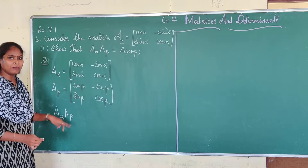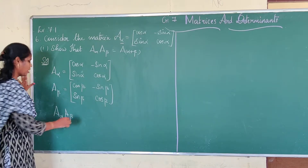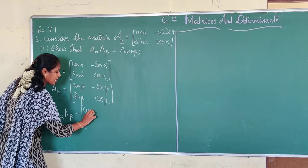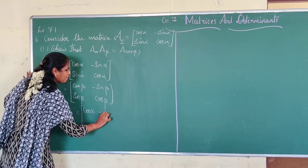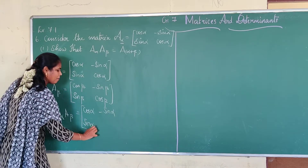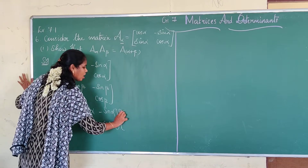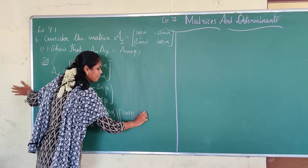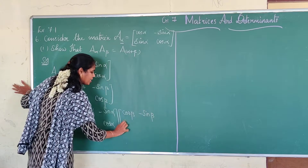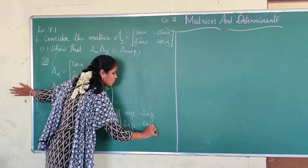A(α) · A(β) is nothing but an ordinary matrix multiplication of A(α) and A(β). So I am going to write the matrix A(α), that is cos α, minus sin α; sin α, cos α — multiplied by cos β, minus sin β; sin β, cos β.